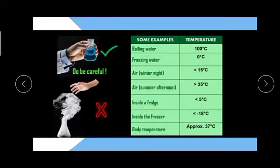Now let's learn about some examples and temperature. What is the temperature of boiling water? 100 degrees Celsius. Temperature of freezing water? 0 degrees Celsius. Temperature of air in winter? Below 15 degrees Celsius. Temperature of air summer afternoon? About 35 degrees Celsius. Inside a fridge? Below 5 degrees Celsius. Inside the freezer? Below minus 18 degrees Celsius. Body temperature? Approximately 37 degrees Celsius.